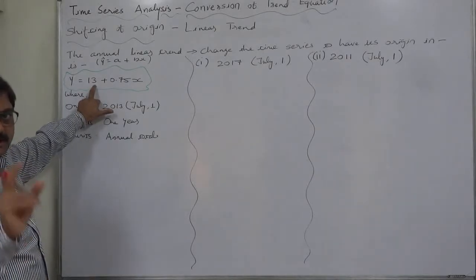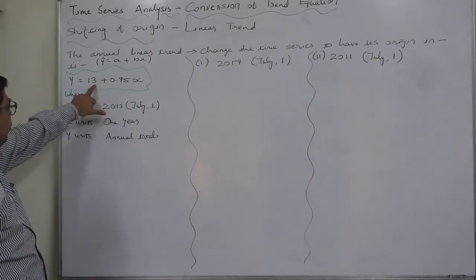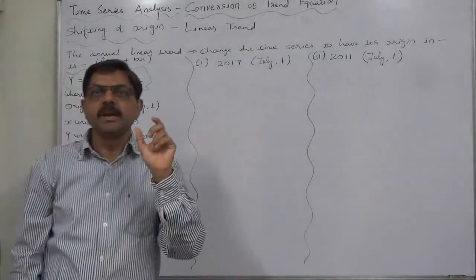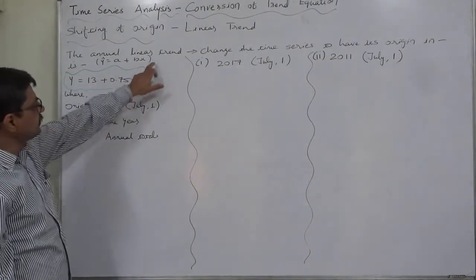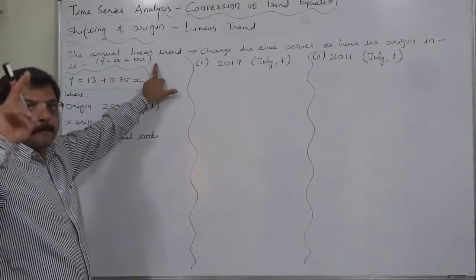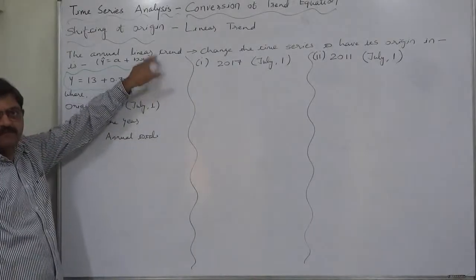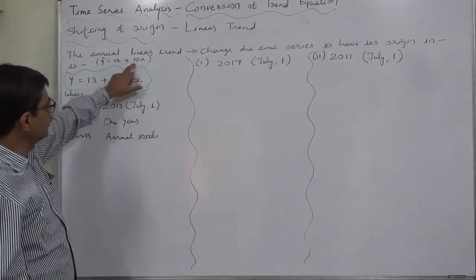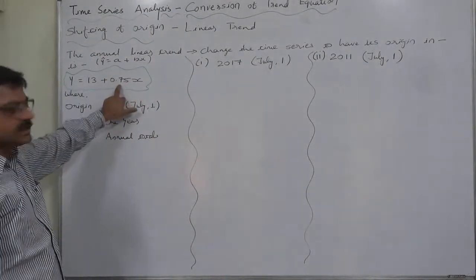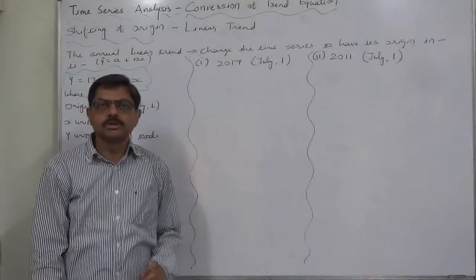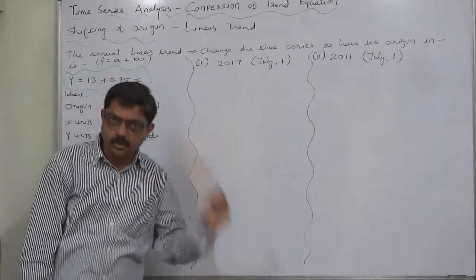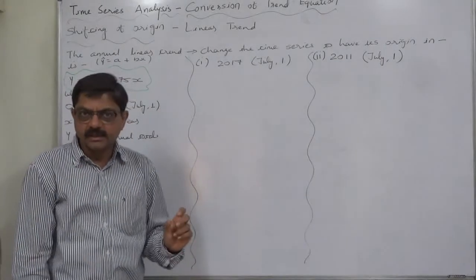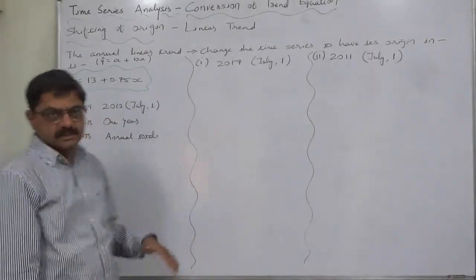The standard form of the linear trend is a plus bx. So 'a' is the constant of the equation — that is 13 — and it is actually the estimated value of the dependent variable for the year or period of origin. And 0.75 is the slope of this linear trend. If we draw a line on the basis of this linear trend, the slope of that line is equivalent to b, that is 0.75. It is positive, so the constant rate of change is positive 0.75, meaning the value gradually increases by 0.75 units.